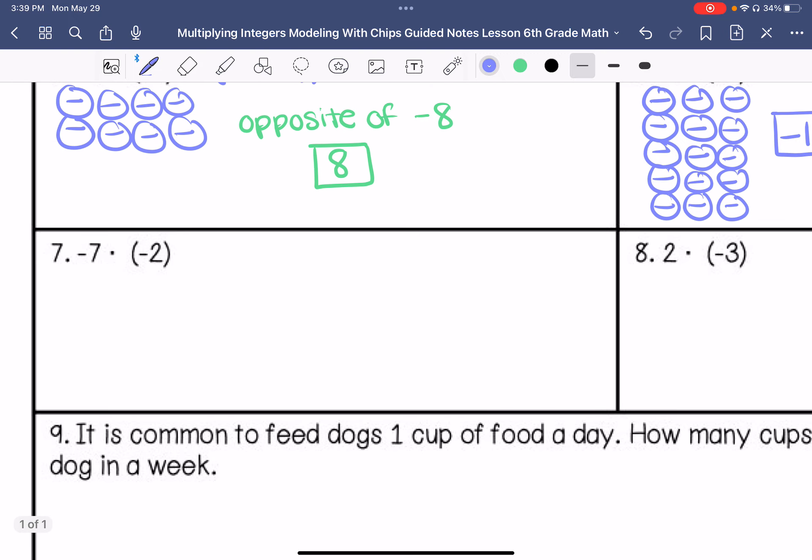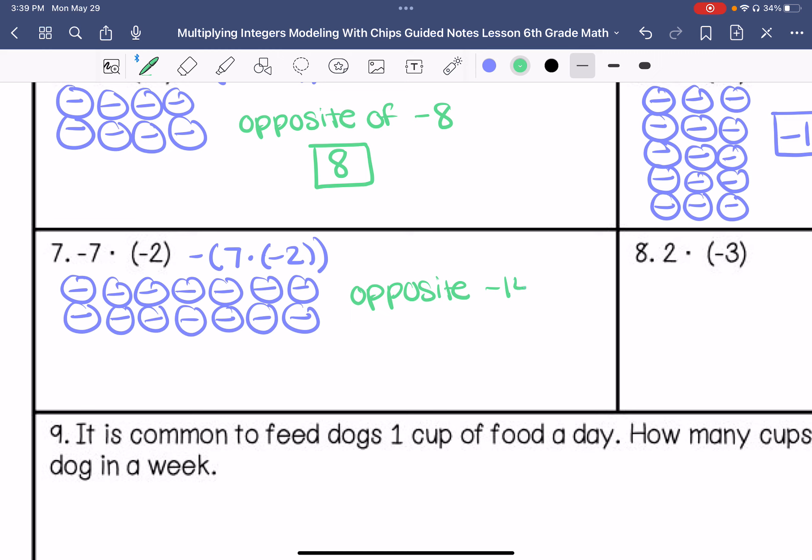Alright, negative 7 times negative 2. I'm going to change that to the opposite of 7 times negative 2. So I'm going to do 7 groups of negative 2. So that ends up being negative 14. So I want the opposite of negative 14. So my answer is positive 14.